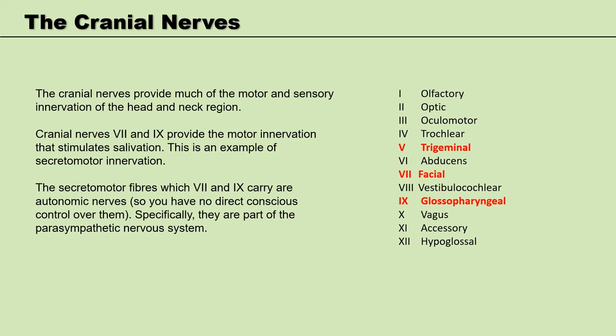Some cranial nerves just carry sensory fibres, whilst others just carry motor fibres. However, most cranial nerves carry a mixture of sensory and motor fibres. The cranial nerves are numbered using Roman numerals 1 through 12.